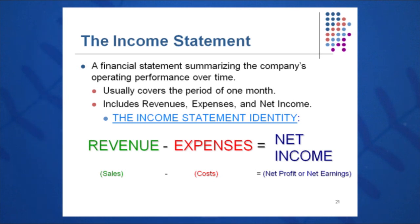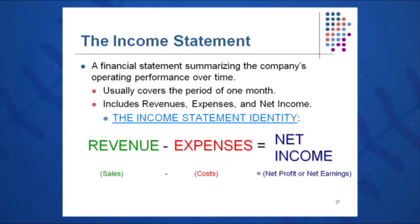The balance sheet is just a one-day snapshot of the company's financial health — what you own on the left side and what you owe. The income statement looks at operations: how much sales did you generate that month, quarter, six months, nine months, or year? What were your expenses, and what kind of profitability do you have when it's all said and done?